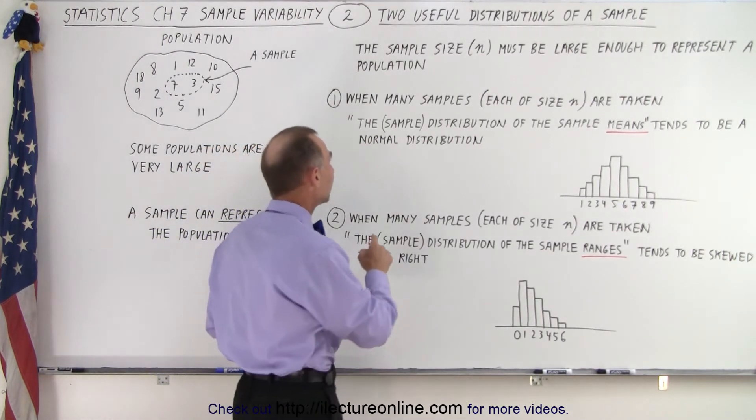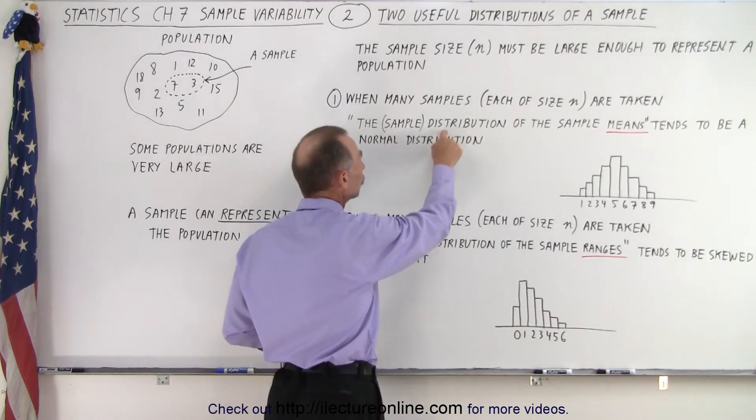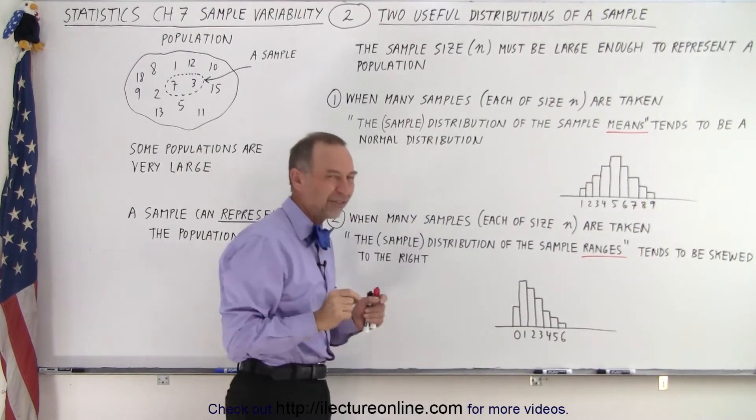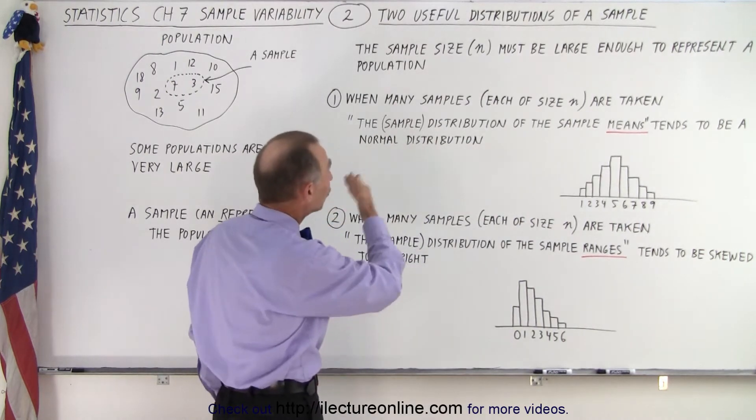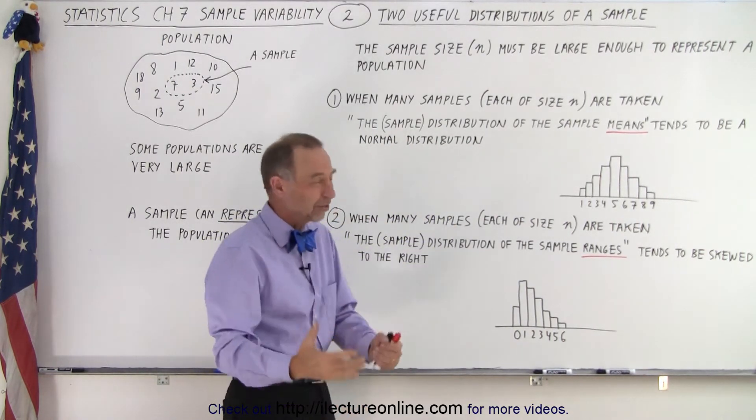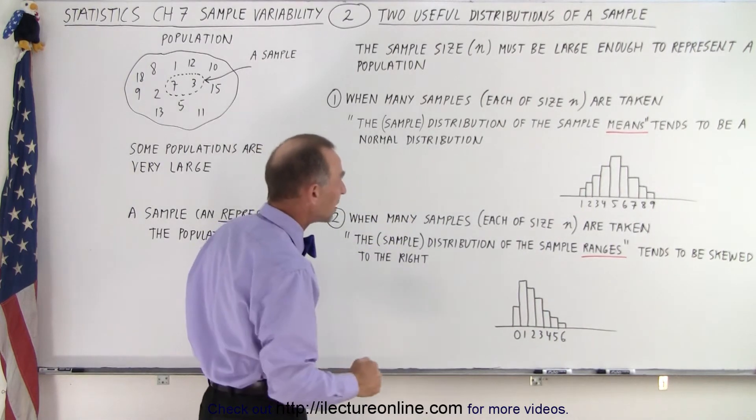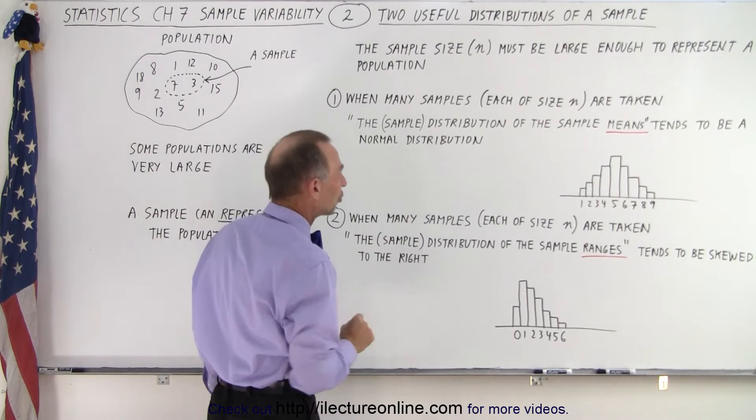We can say here that the sample distribution of the sample means, now I don't like that we put in the word sample there, I'd rather read the distribution of the sample means, it reads easier, but they typically write it as the sample distribution of the sample means, tends to be a normal distribution.